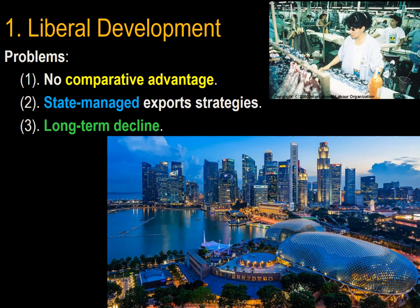There are three problems with liberal development. First, in some instances there is no comparative advantage — for a country like Afghanistan, infrastructure and education are so low that extremely low labor costs don't compensate for low productivity, making it very difficult to develop exportable industry. Second, state-managed export strategies — like those of Japan or South Korea — are not a free market. Third, trade depends on competitive worker productivity, which in turn depends on education, health, security, anti-corruption, and infrastructure investments, which may not always be available.